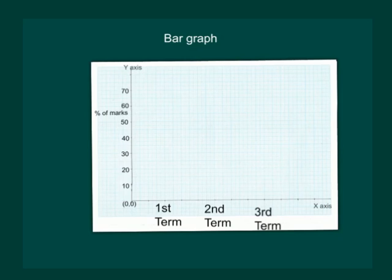On x-axis we mark the terms: first term, second term and third term, taking two centimeters as one unit. And on the y-axis we will mark percentage of marks, starting with zero and one centimeter equal to ten percent.